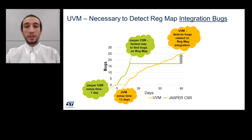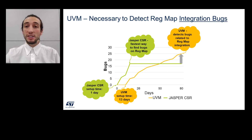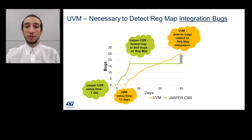It's important to point out that UVM can find bugs related to how the register map interacts with the other parts of the design. This is something that Jasper CSR does not cover. Thus, to achieve complete register map verification, we must combine both methodologies.